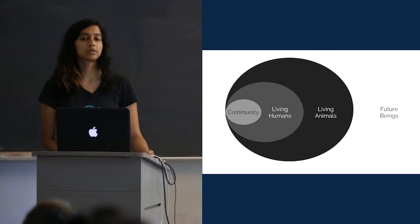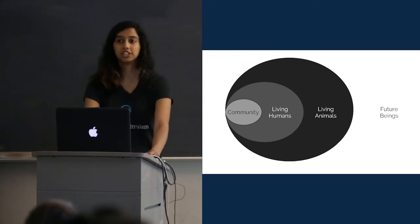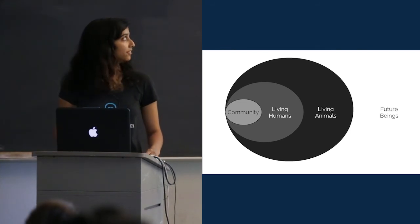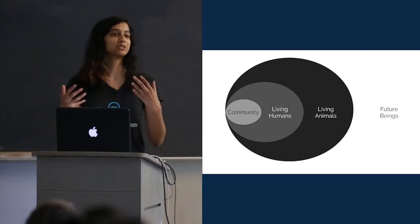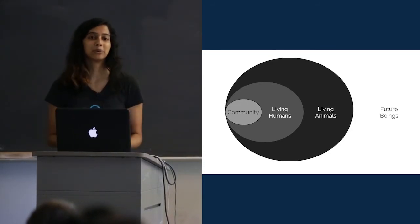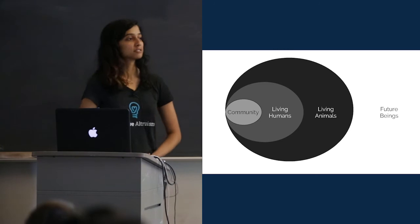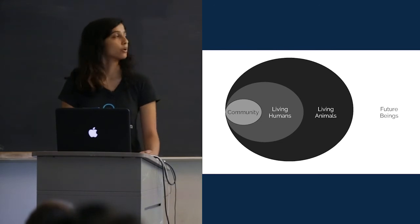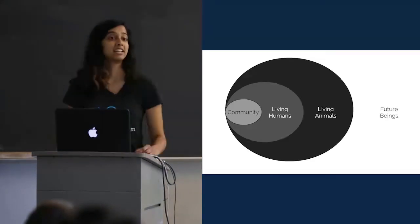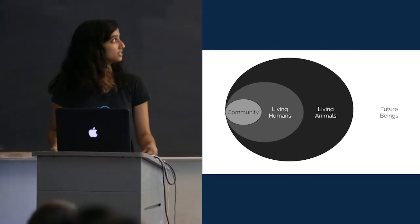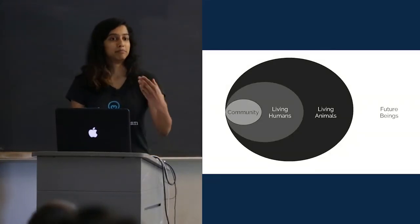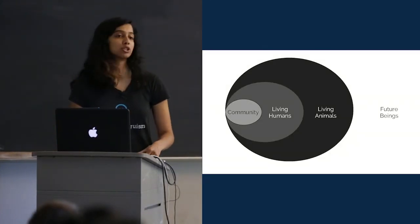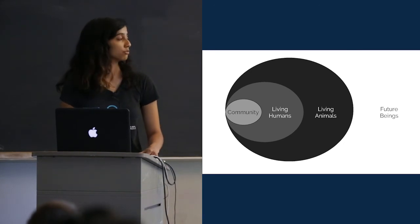And most effective altruists also care about future humans and animals. Care about how our actions affect generations to come. And those of us, again, most of us struggle with how to weight people who will be alive in the future, with people who are alive today. It's not a solved problem. But those of us who decide that we care a lot about future beings, often work on reducing existential risk. Because if humanity goes extinct or if civilization is derailed, then billions, trillions of future people may not come into existence or may live worse lives.